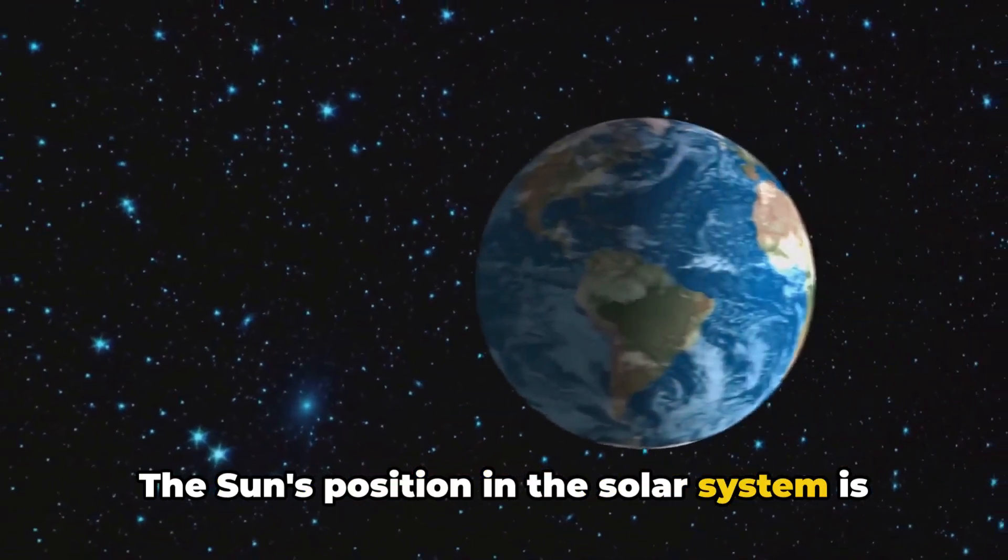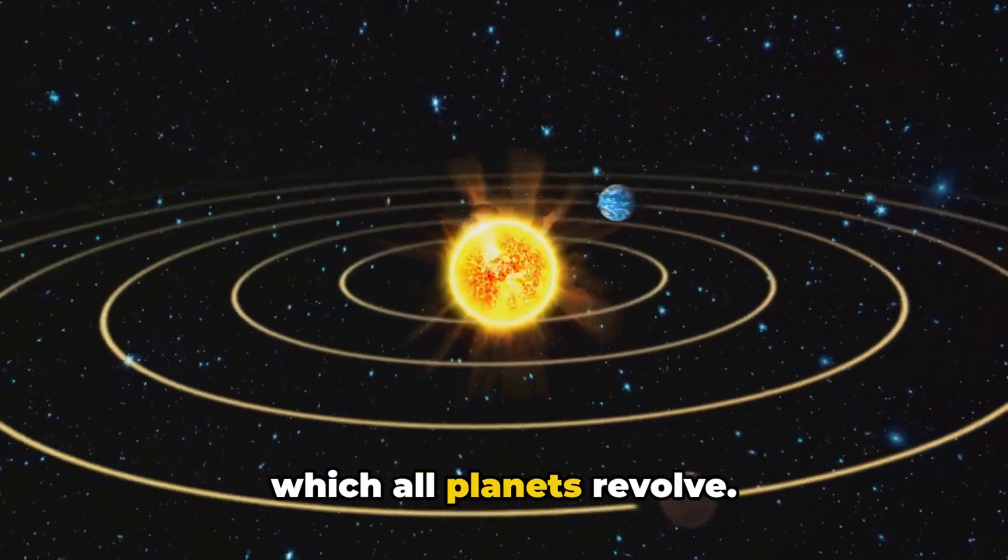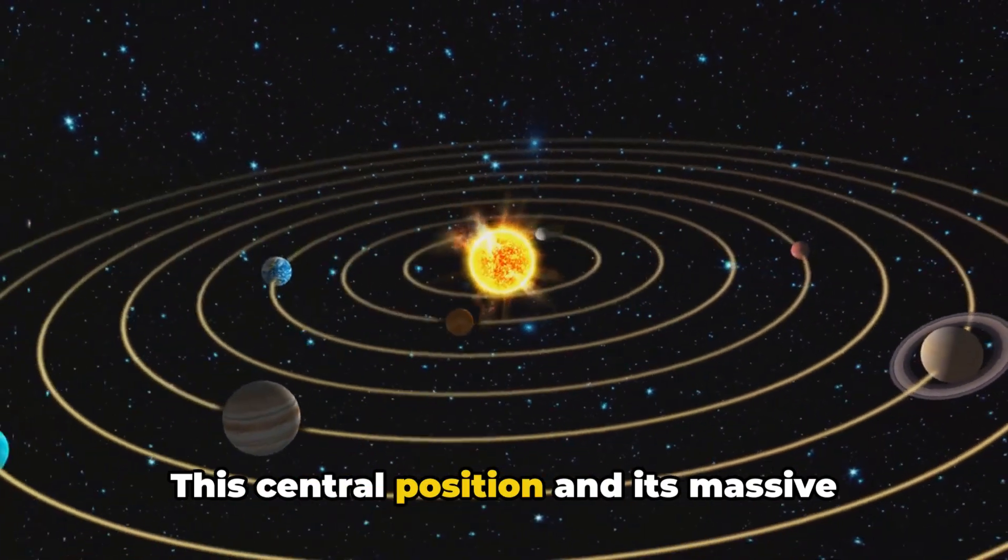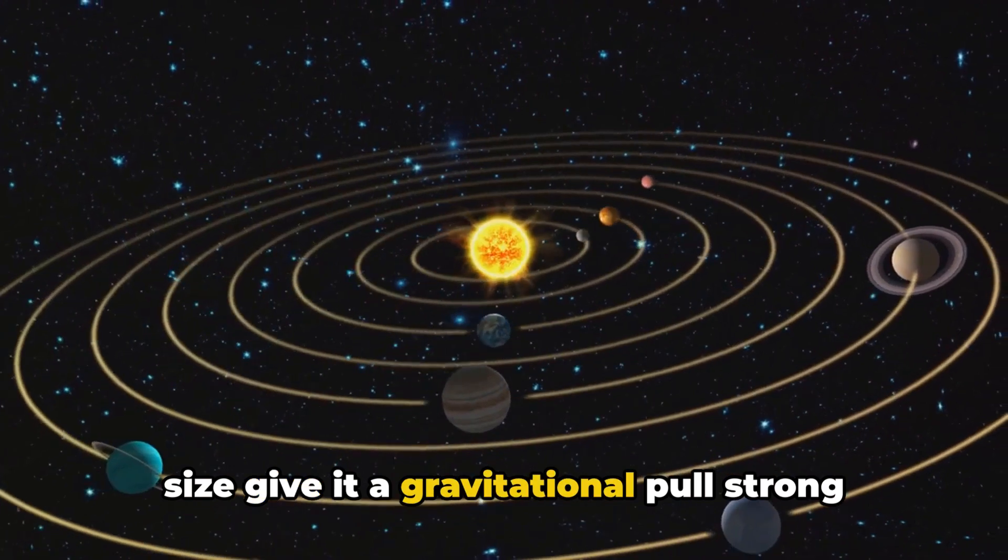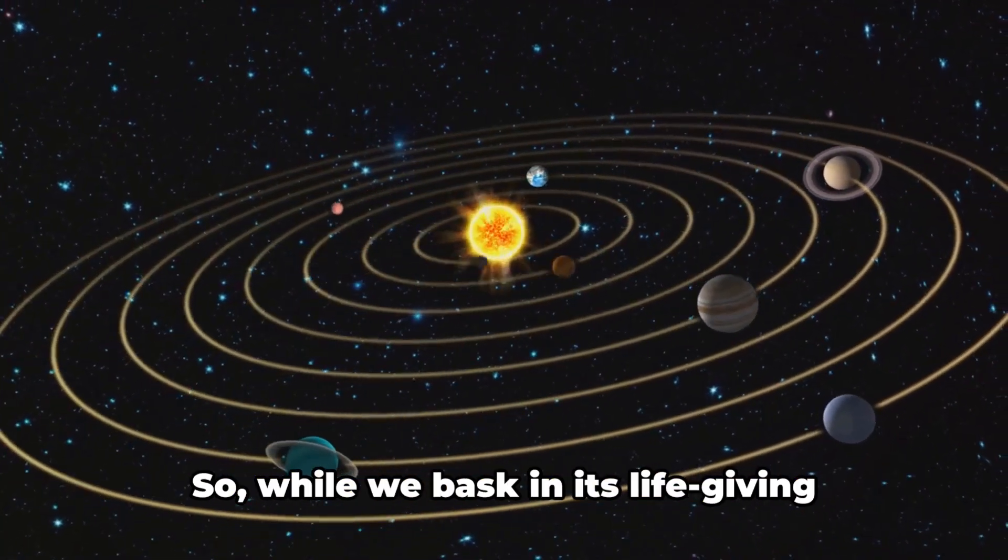The sun's position in the solar system is a special one. It is the heart of our system, around which all planets revolve. This central position and its massive size give it a gravitational pull strong enough to keep the entire solar system in check.